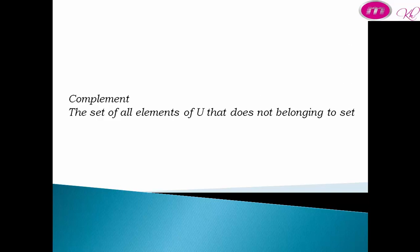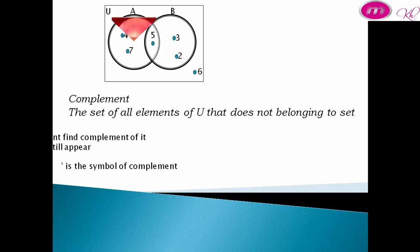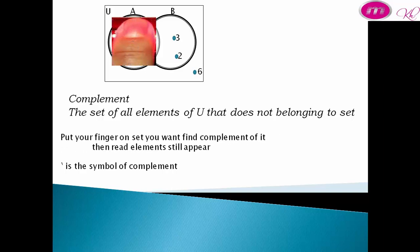Complement: the set of all elements of U that do not belong to the given set. This is the symbol of complement. Put your finger on the set you want; to find the complement of A, read the elements that still appear: 3 and 6. So complement of A equals {3, 6}.